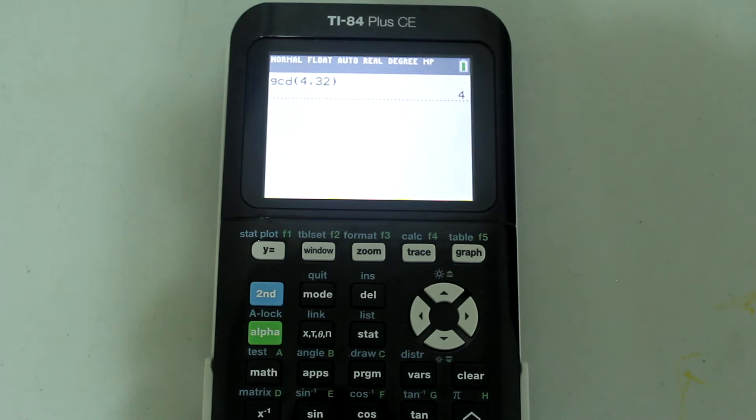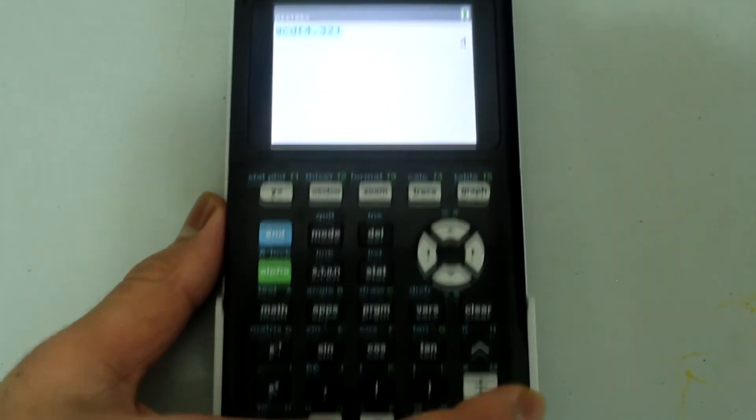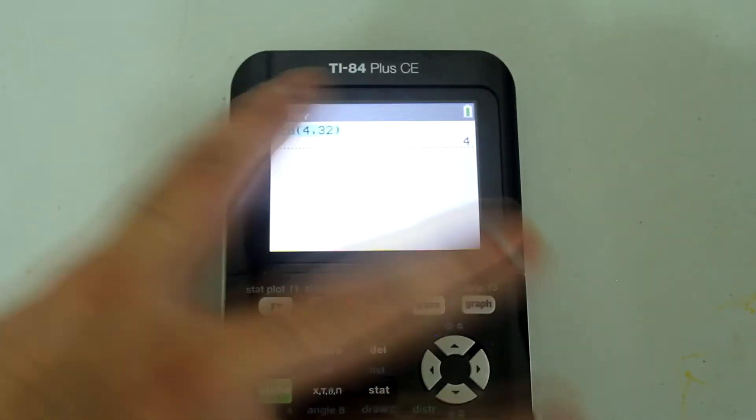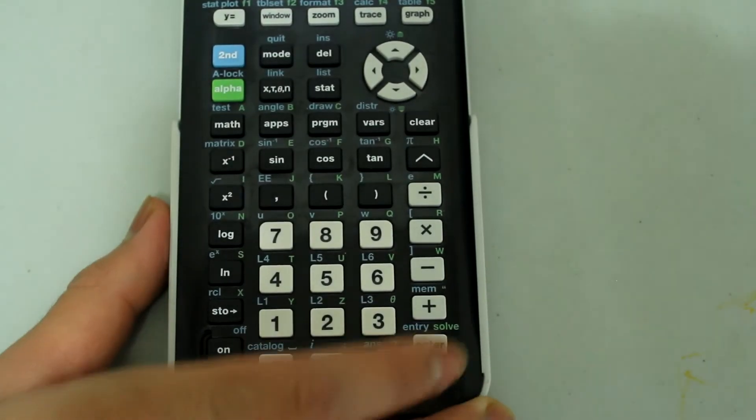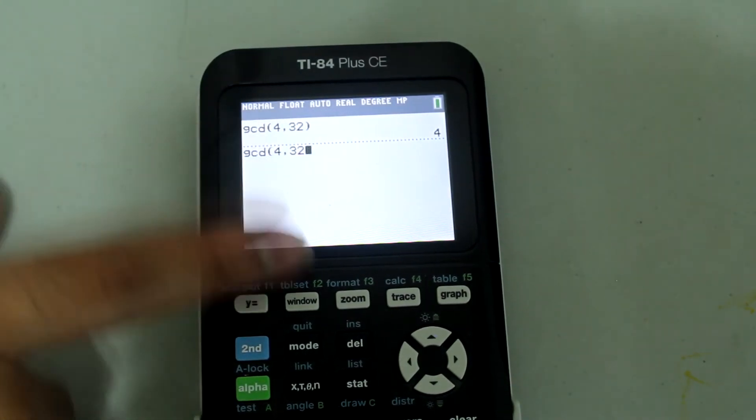Now if I wanted to find the greatest common divisor of more than two numbers simultaneously, and if I use the GCD command, I'm going to just arrow up, select it and press enter since I have the GCD command on the screen. So I have 4 comma 32.